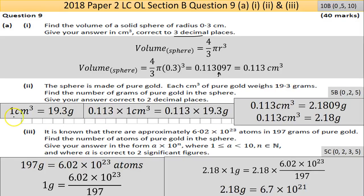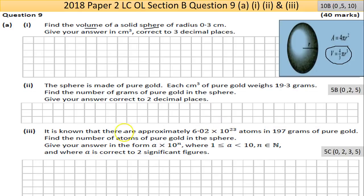I've worked it out here. I've written out the conversion factor: 1 cm³ equals 19.3 grams. To convert the conversion factor, multiply both sides by what you're converting. Trying to convert 1 into 0.113, so multiply that by 0.113. If you do it to one side of an equation, you must do it to the other. So 0.113 cm³ equals 2.1809 grams. Rounded at two decimal places, the 0 won't affect the 8, so it stays at 2.18 grams.